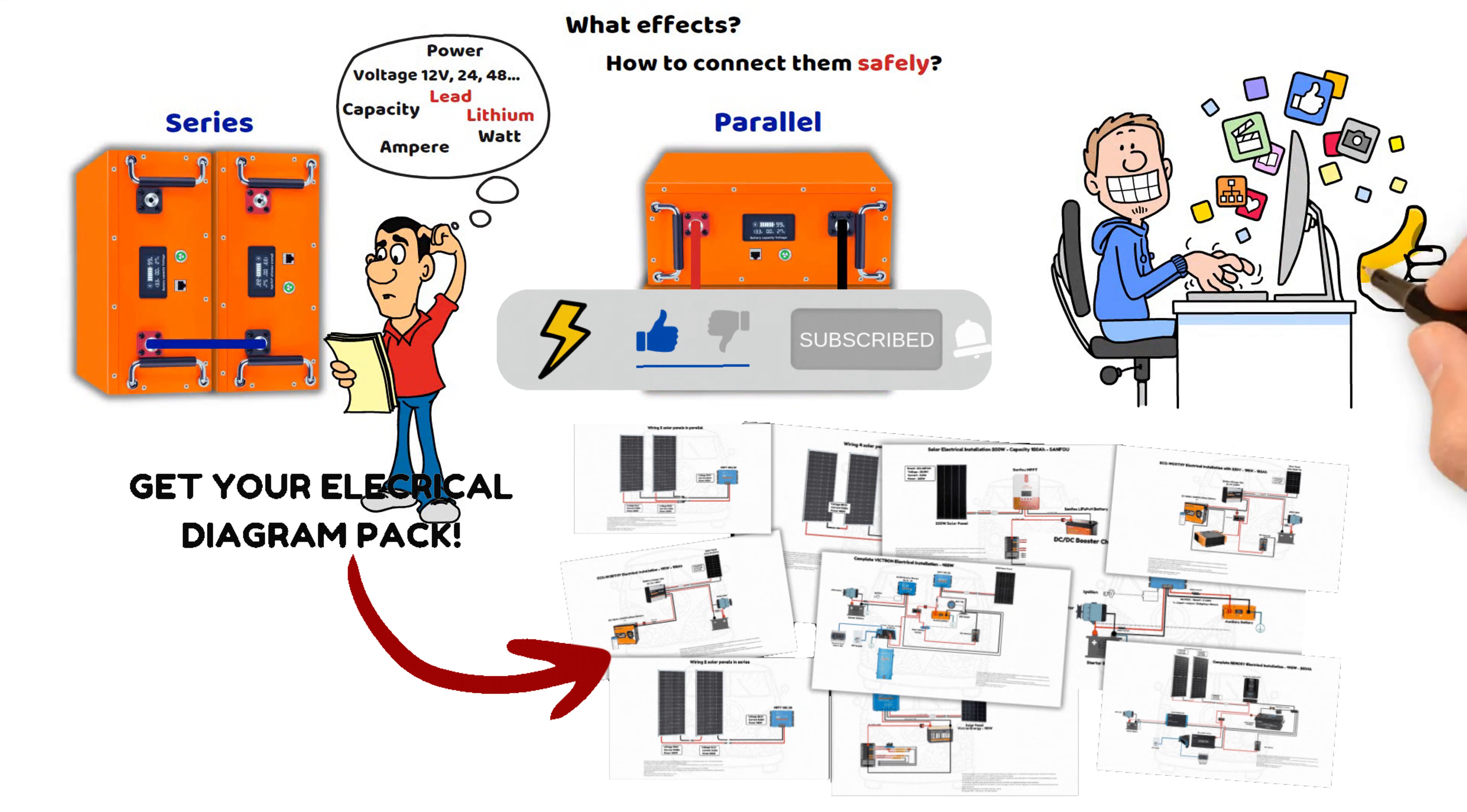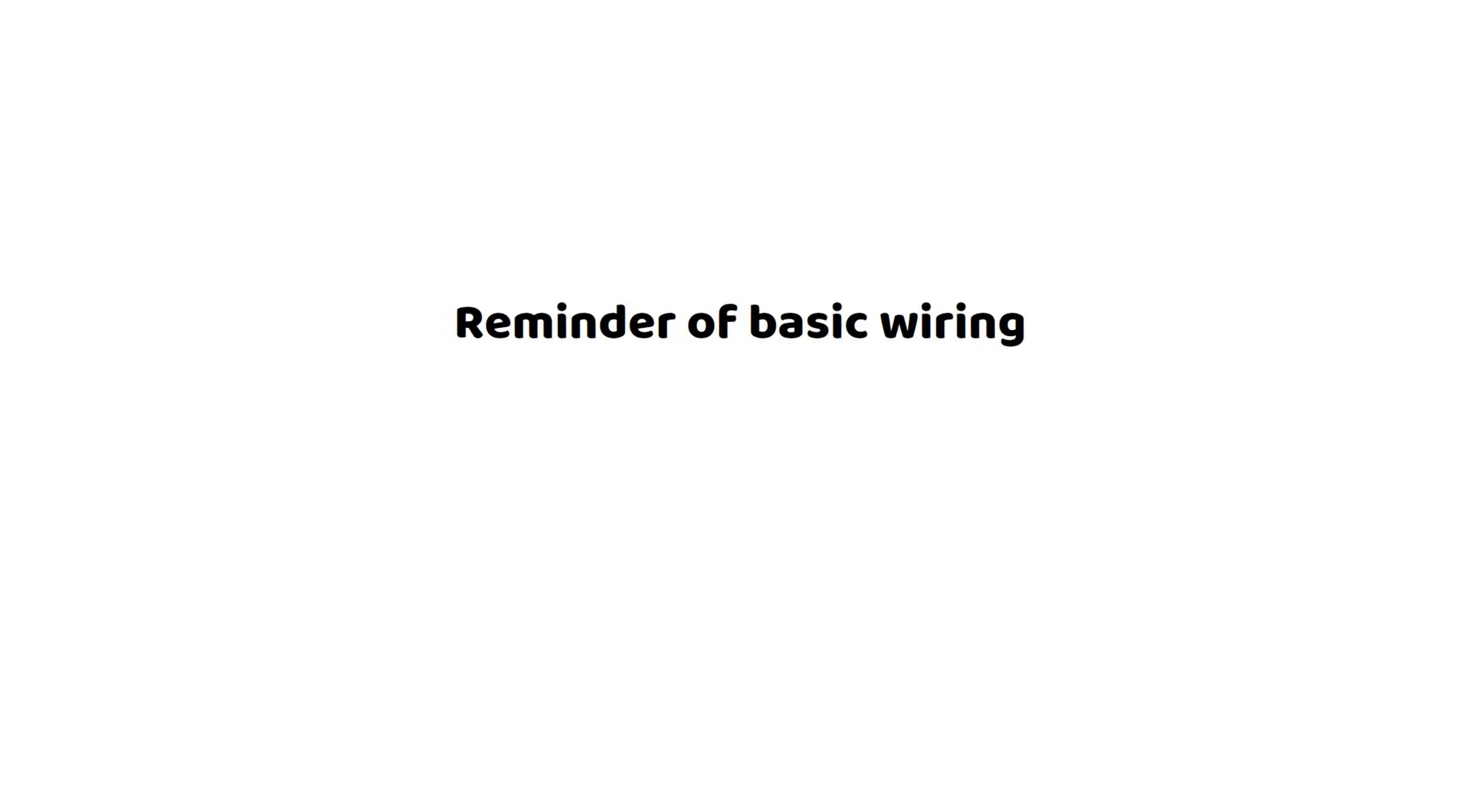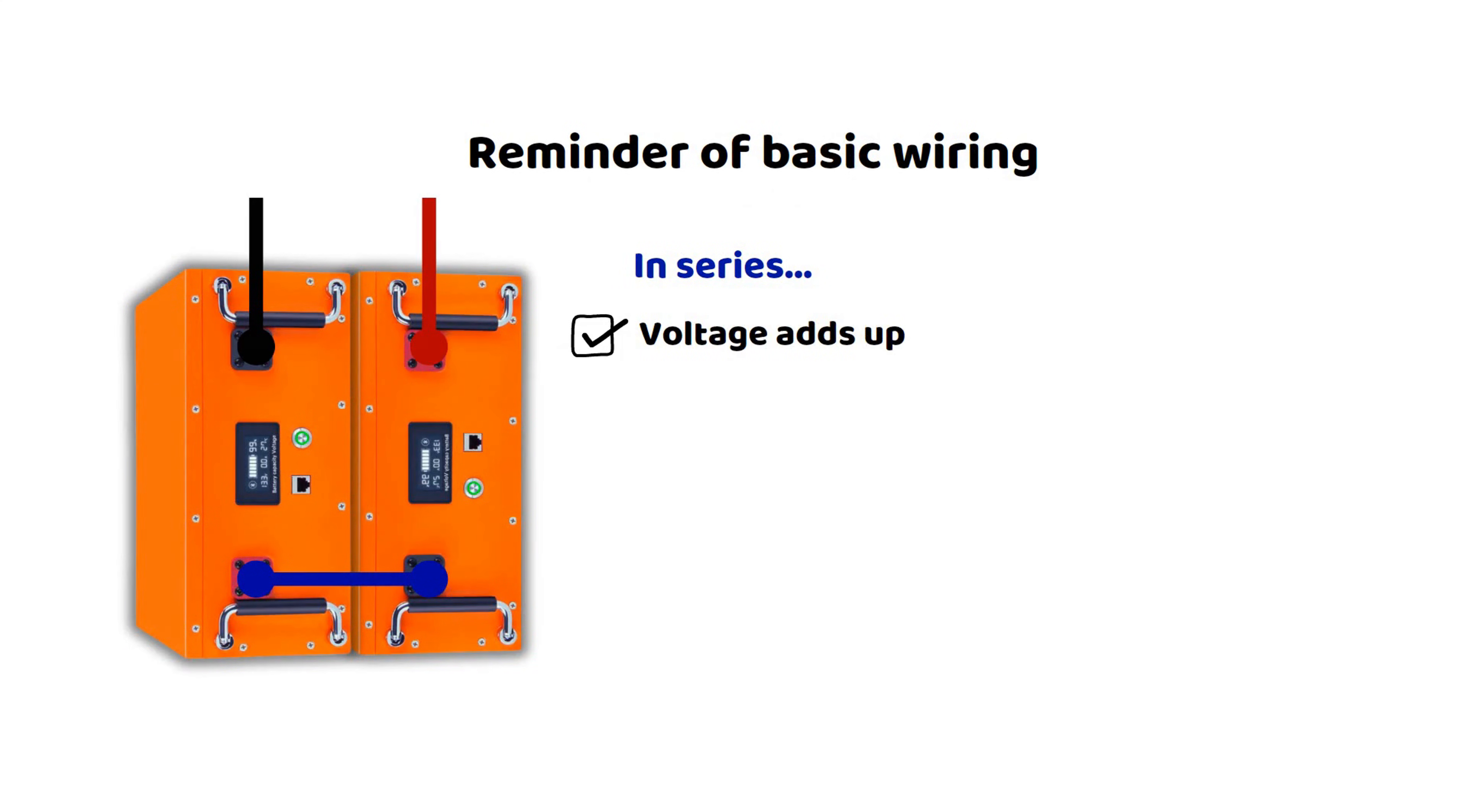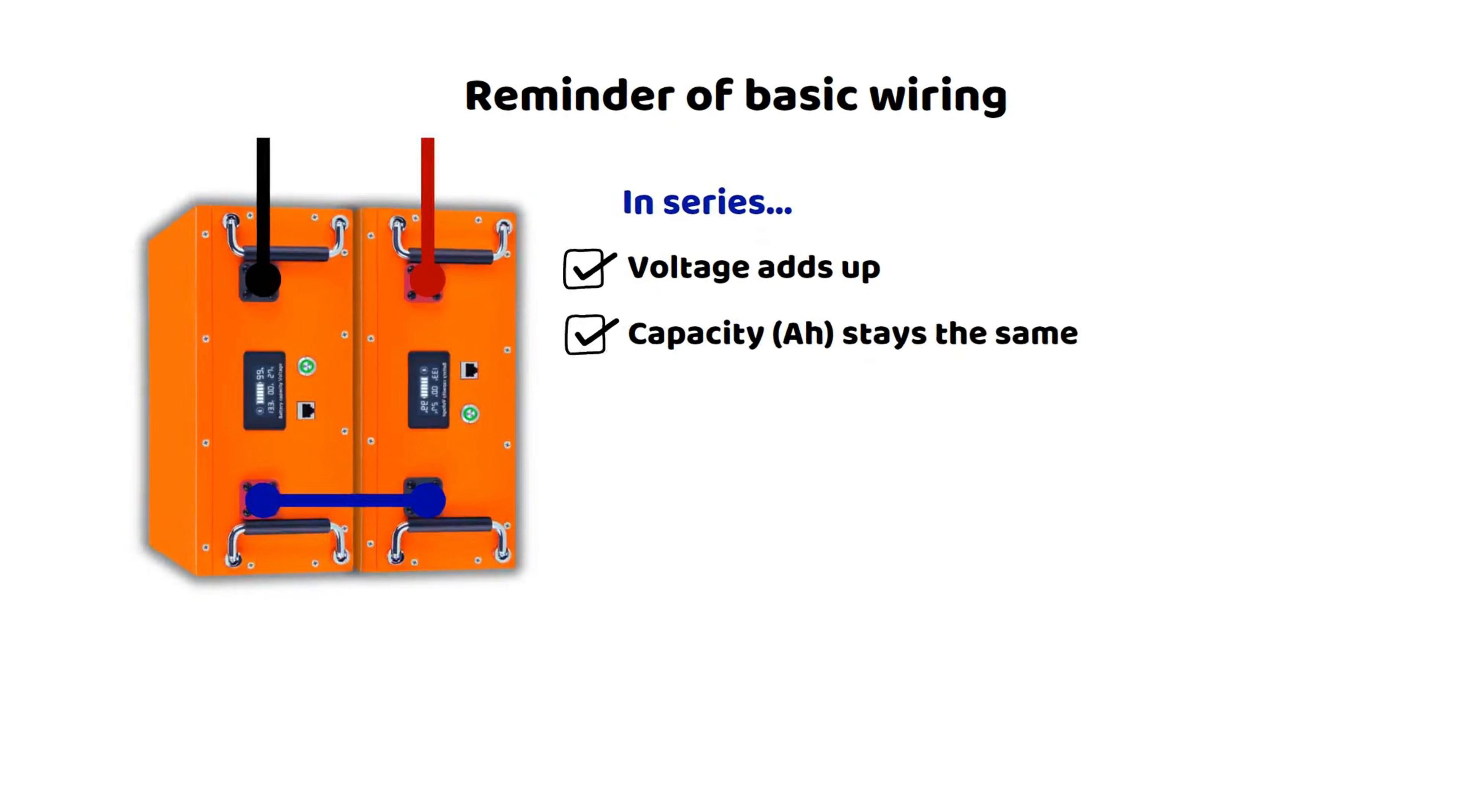Let's start with a quick reminder of the basics. When batteries are connected in series, the voltage adds up while the capacity in ampere hours remains the same. For example, two batteries of 12 volts and 200 ampere hours connected in series form a block of 24 volts and 200 ampere hours.